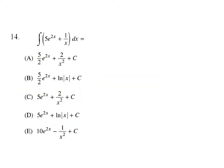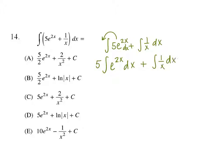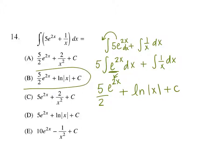For our next problem, we integrate 5e to the 2x plus 1 over x dx. Moving the constant 5 outside, we integrate e to the 2x dx — which gives e to the 2x over 2 — and then integrate 1 over x dx, which gives the natural log of the absolute value of x. Combining, we get 5 over 2 times e to the 2x plus the natural log of the absolute value of x, plus c. That's answer choice B.